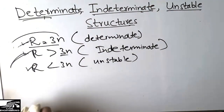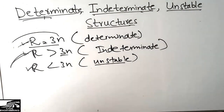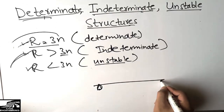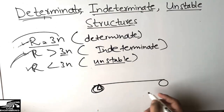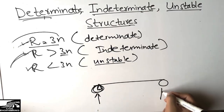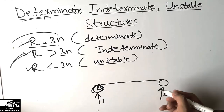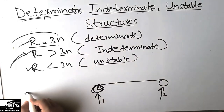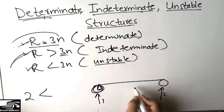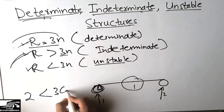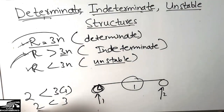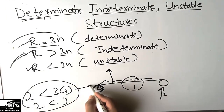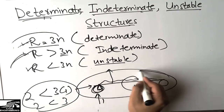For unstable structures, consider a simply supported beam but with roller supports at both ends. A roller can only resist vertical loads, so there are only two vertical reactions — r = 2. With one segment, n = 1 and 3n = 3. Since 2 < 3, this is an unstable structure. If a horizontal load is applied, the structure cannot support it, which is why it is classified as unstable.